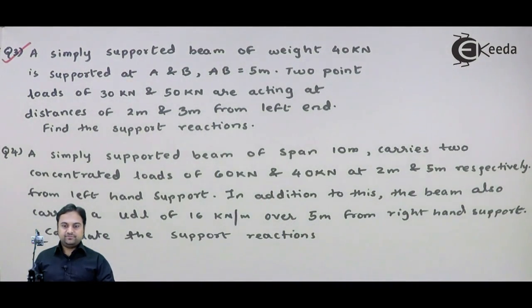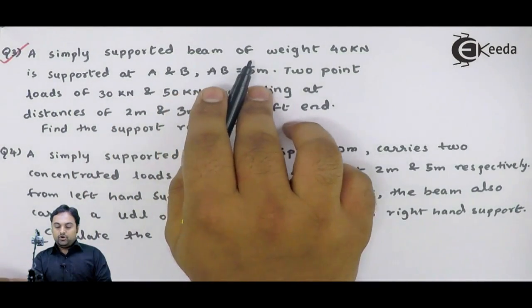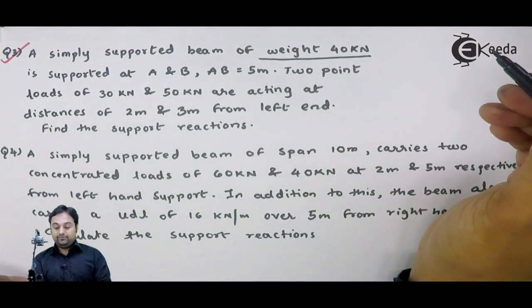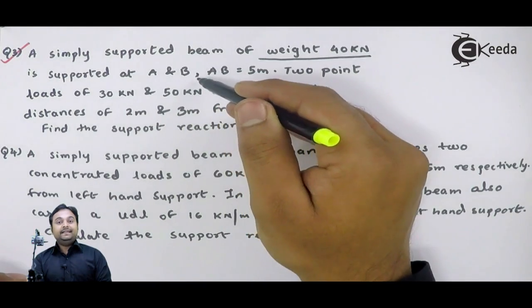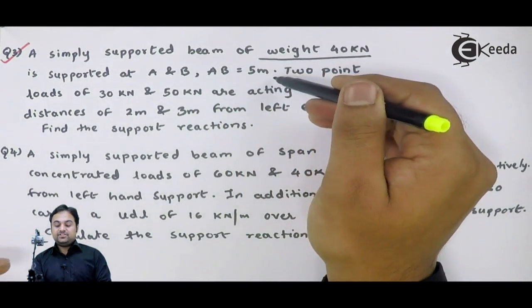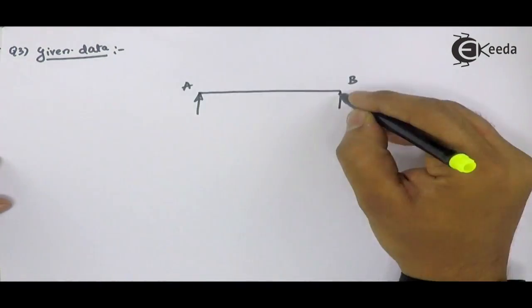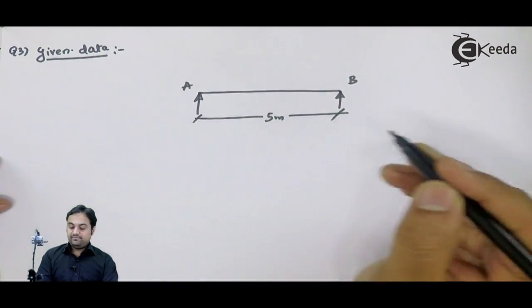This is the problem which is given. As we see in the problem, the diagram is not provided, but they have given some information with the help of which we can easily draw the diagram. Let us start by writing the data first. A simply supported beam of weight 40 kN - this is the first question in which the weight of the beam is given - is supported at A and B. AB equals 5 meters, meaning AB is the span of the beam.